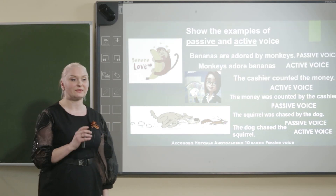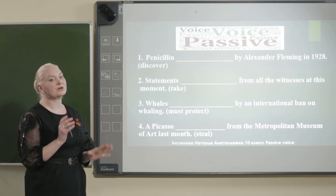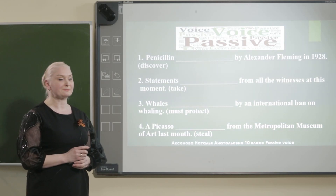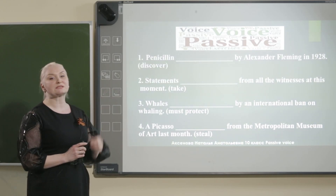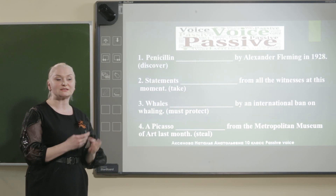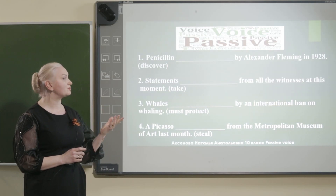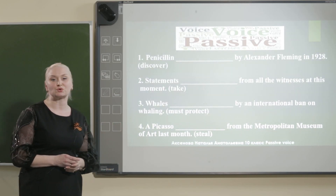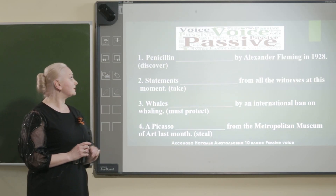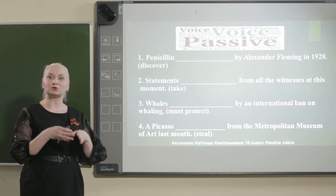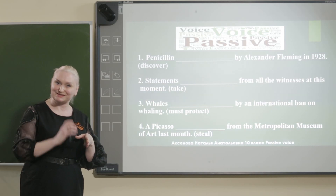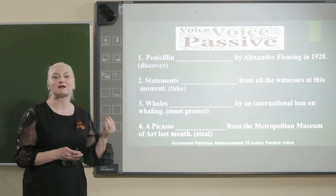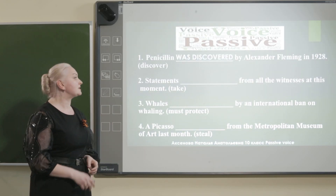Now let's train our skills and abilities. Поработаем над нашими навыками. The first sentence — in which tense is it given? Penicillin [was discovered] by Alexander Fleming in 1928. That's obvious — it's past tense. Очевидно, что это прошедшее простое время. And penicillin is singular, so we have to use 'was'. Penicillin was discovered in 1928.